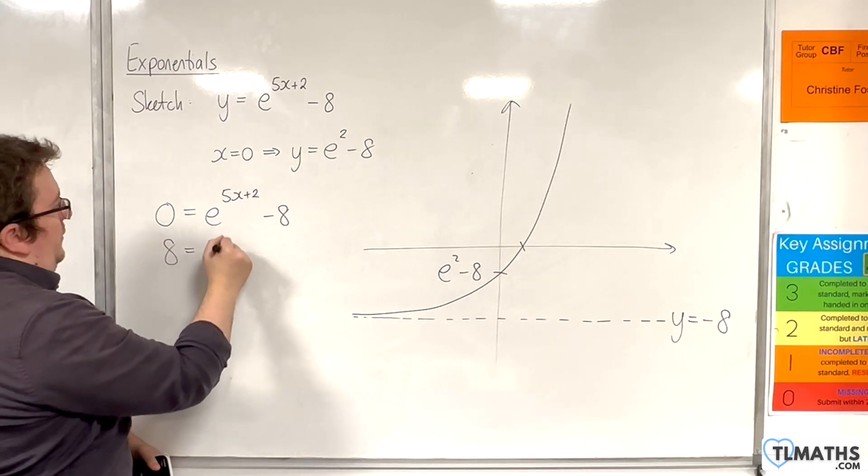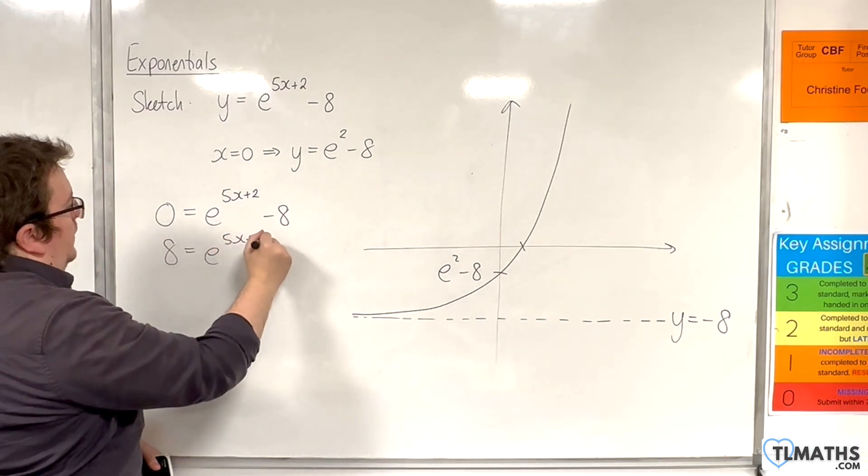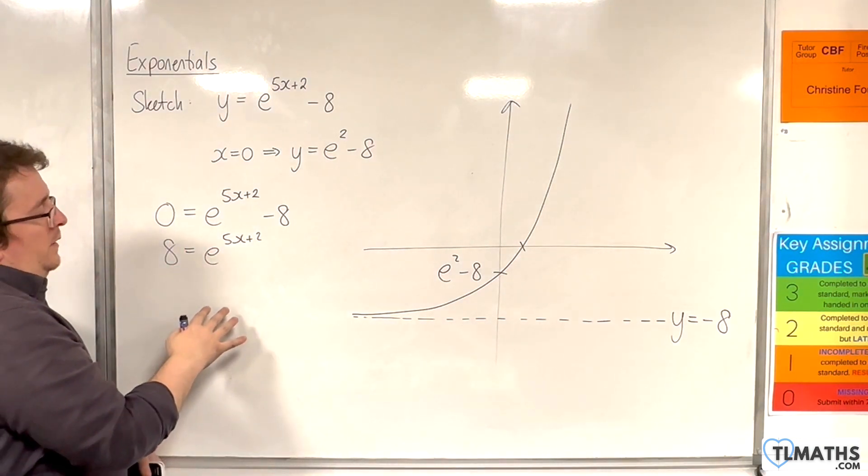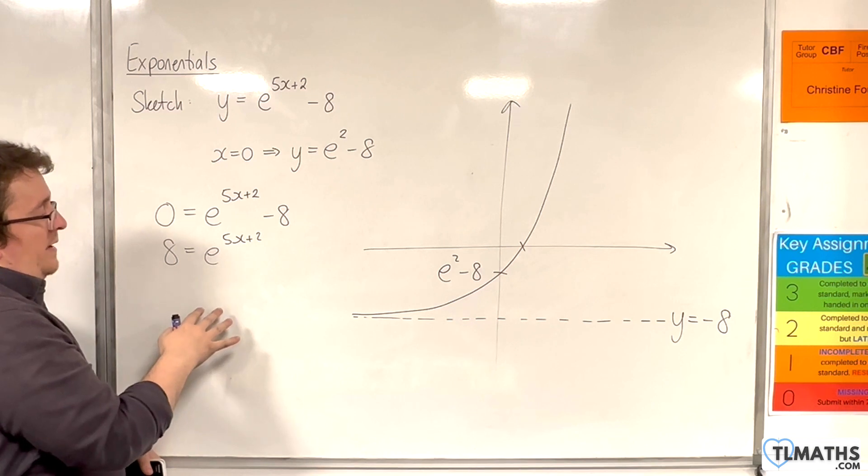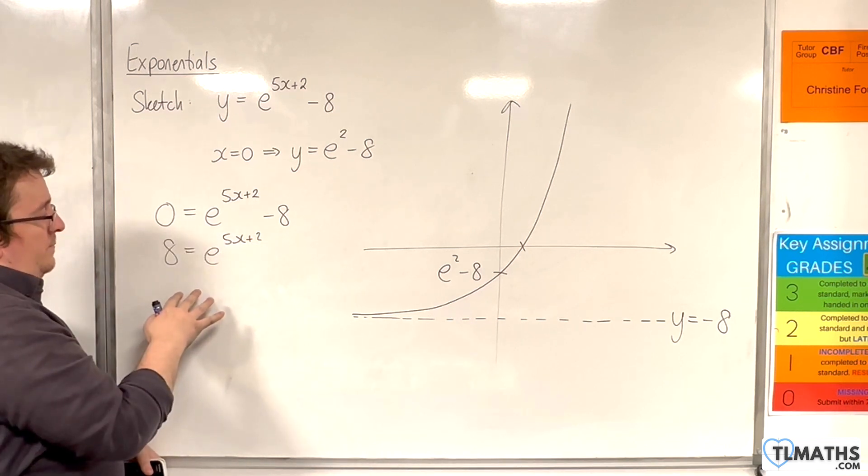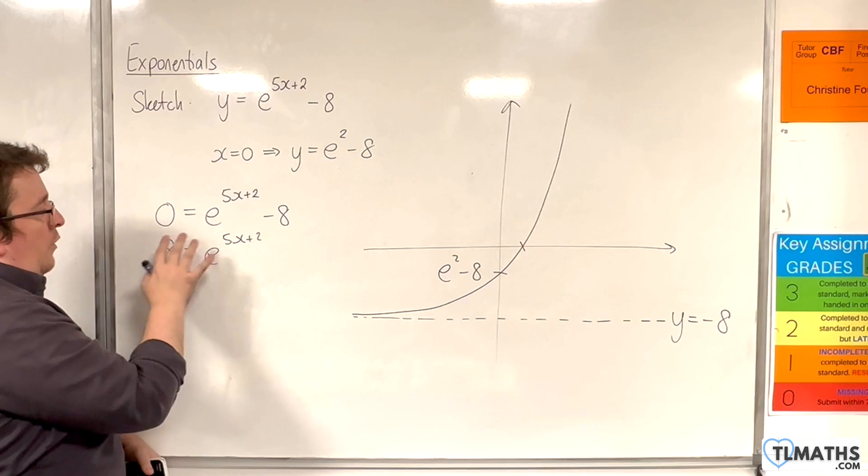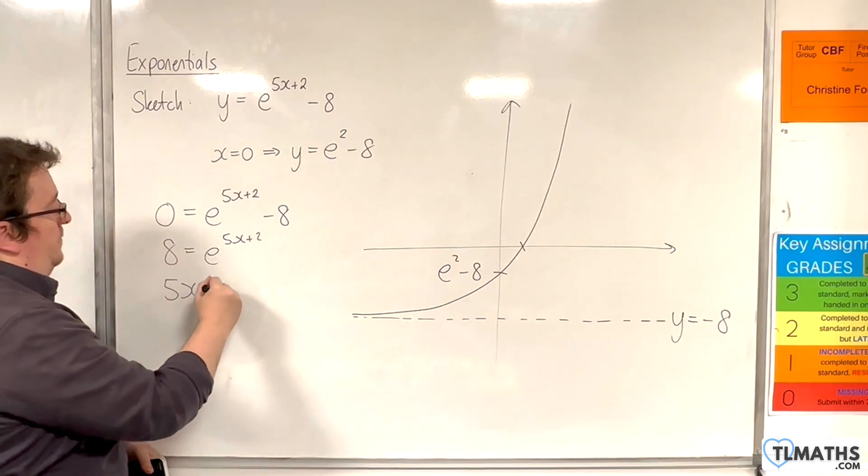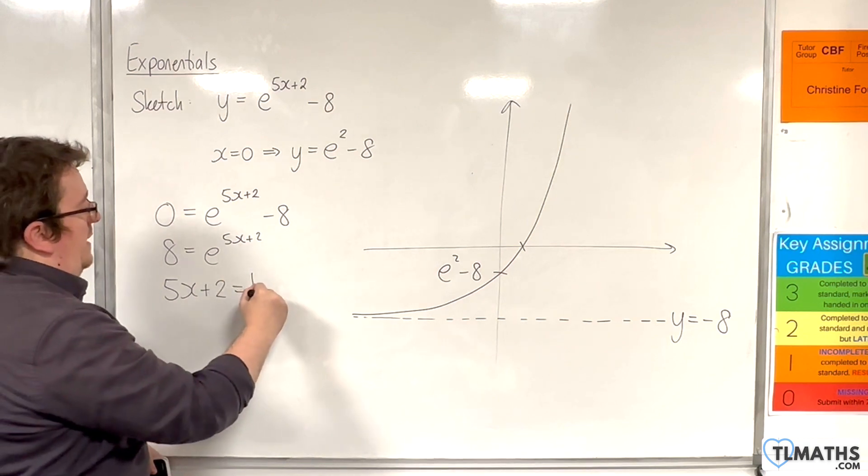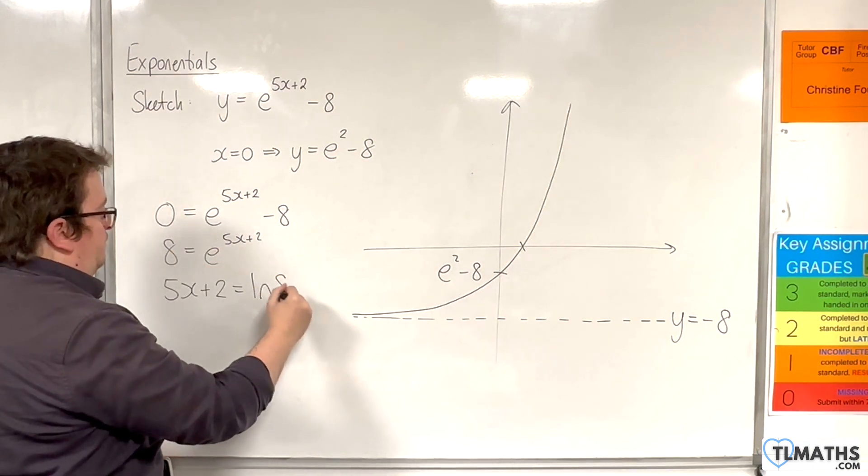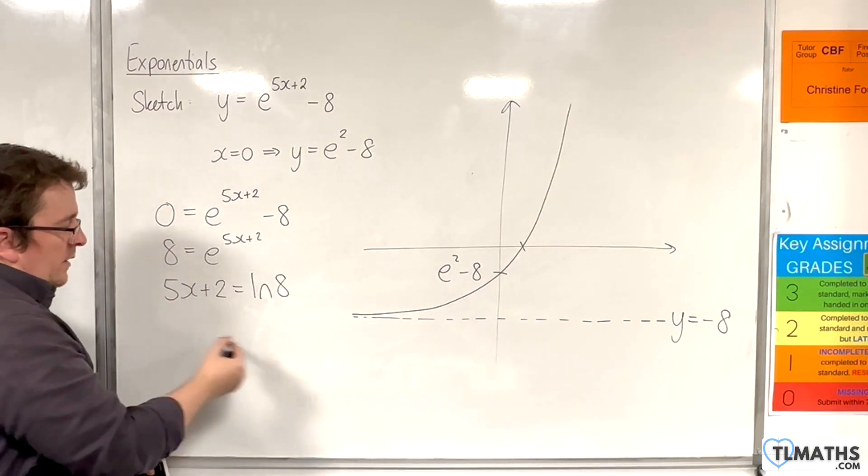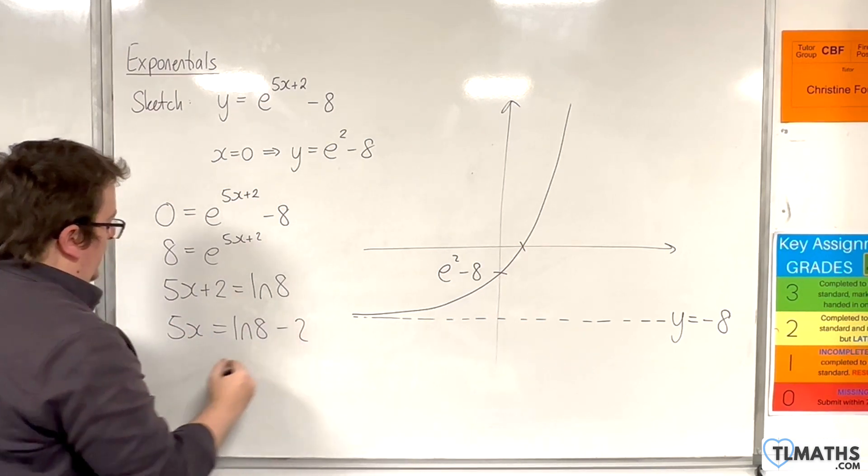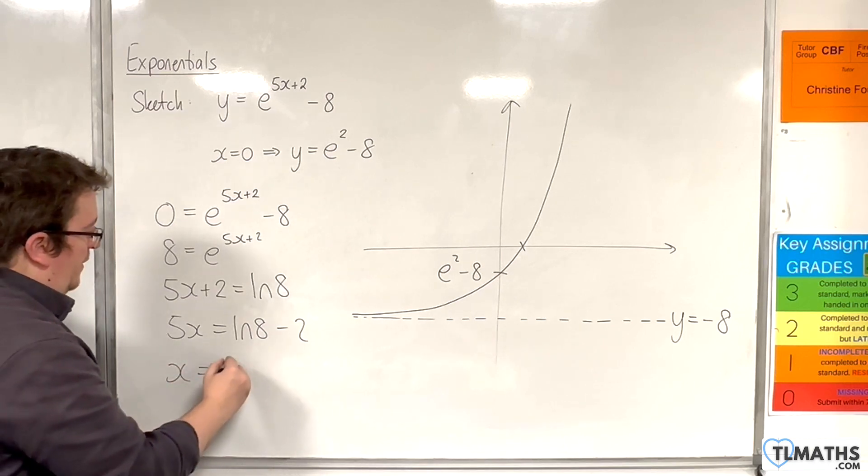Add the 8 to both sides. And now we're going to go from exponential form to logarithmic form. So I'm going to introduce here the natural log. So log base e of 8, which is ln of 8. So the 5x plus 2 is log base e ln of 8. Take the 2 from both sides, and then divide both sides by 5.